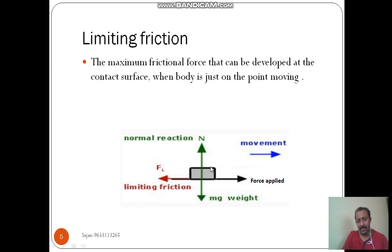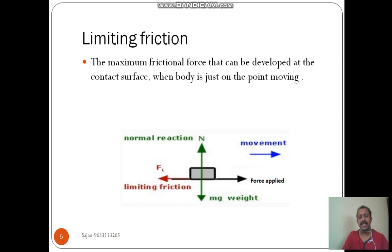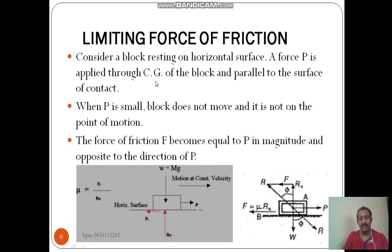On a horizontal surface, a rightward force is applied so that the body has a tendency to move towards the right direction. Gradually, I am increasing the applied force. At a certain point — the point of moving — the body will move towards the right direction. That point is just starts to move, or impending condition. The force is applied through the center of gravity of the block, parallel to the surface of contact. If we are applying force P towards the right direction, the frictional force will be opposite to the tendency to move or motion.